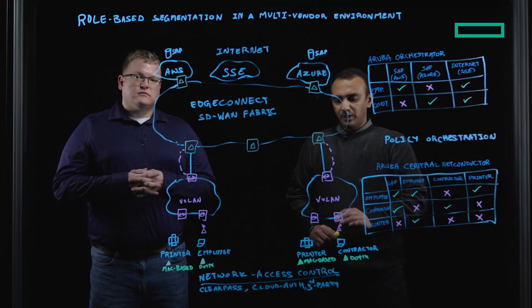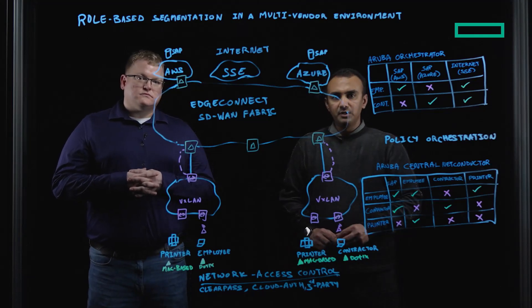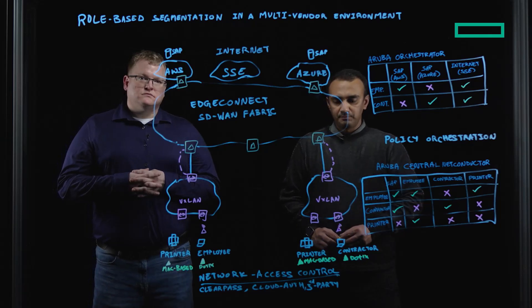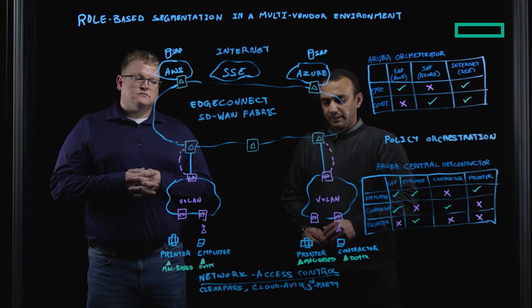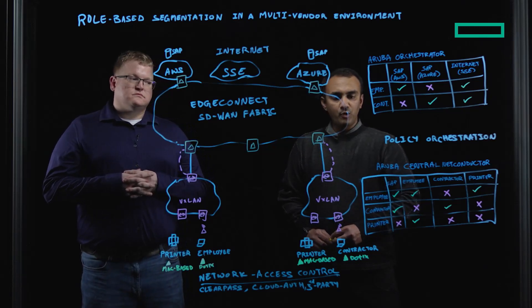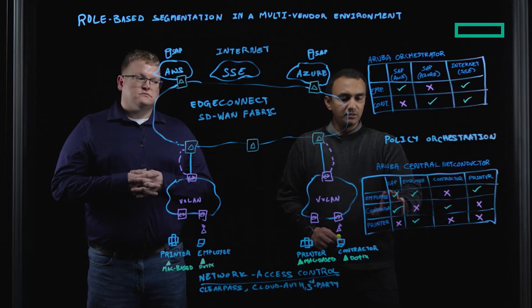Here, customers have various endpoints connected to the network, which uses some NAC solution to authenticate and authorize and then give them a role. At this point, customers have role associated to those endpoints, and they could use that information to create role-based access control as defined here.